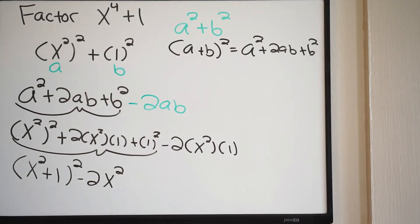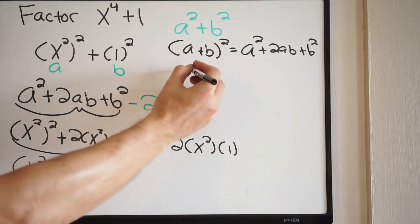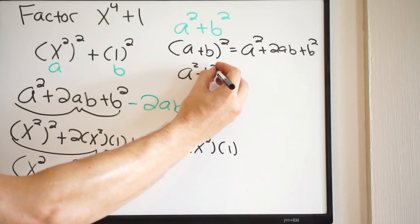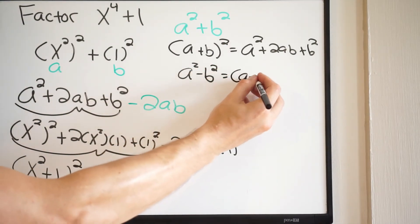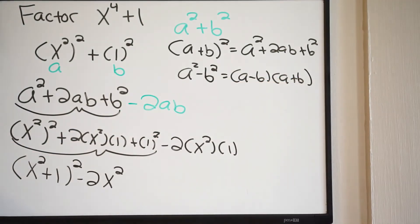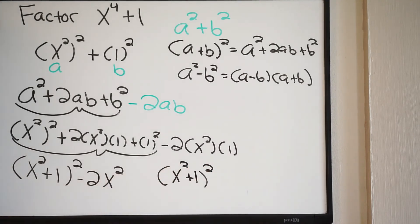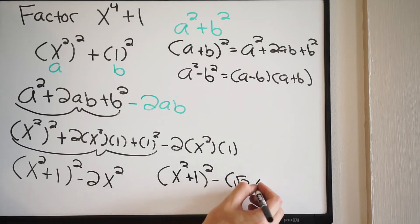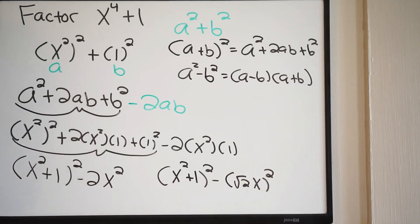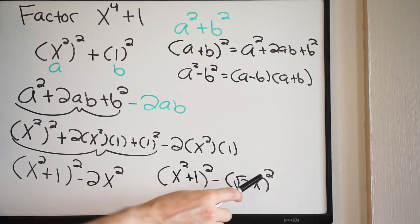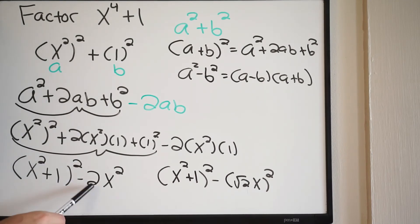At this point I want to think about a difference of two squares, which is a squared minus b squared, factoring as (a minus b)(a plus b). I'm almost there except I need to rewrite the last term. I want to square the whole term, so I can rewrite negative 2x squared as minus the square root of 2 times x, all squared. Using properties of exponents, the square root of 2 squared is 2 and x squared is x squared — so now we're set up for a difference of two squares.